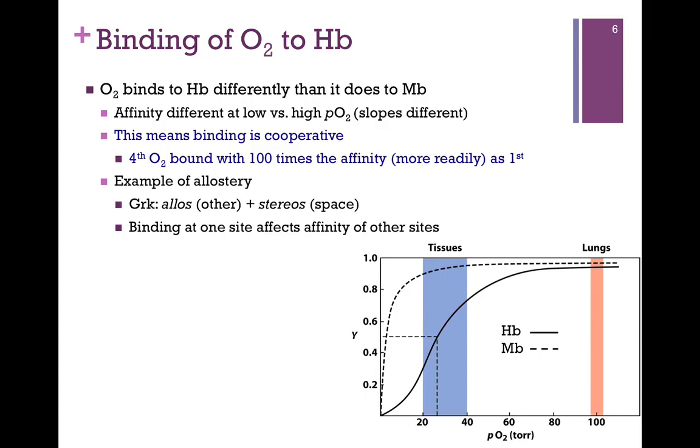So when we look at this binding pattern for hemoglobin, this difference in binding patterns at low concentration, this very shallow slope, and a steeper slope as we increase that concentration, that tells us that the binding is cooperative. Remember, there are four subunits, each one carries a heme group, each one can bind an oxygen. So this tells us that the first oxygen binds with less affinity than the last. In fact, that fourth oxygen binds with 100 times the affinity as the first. And that's the difference in this binding curve.